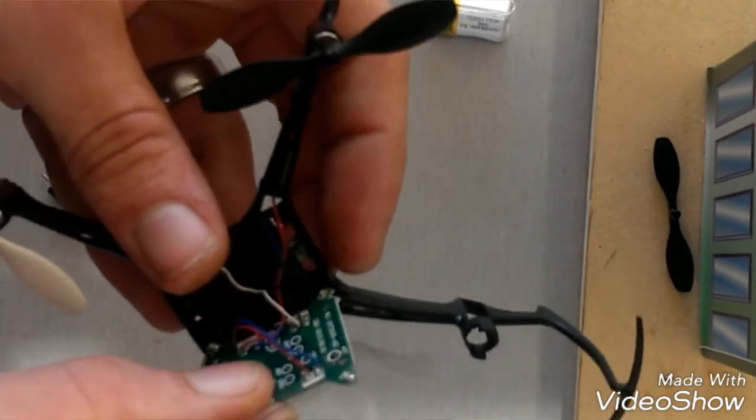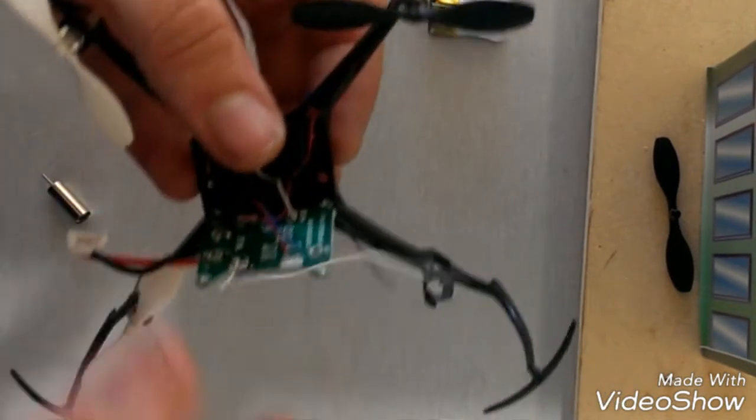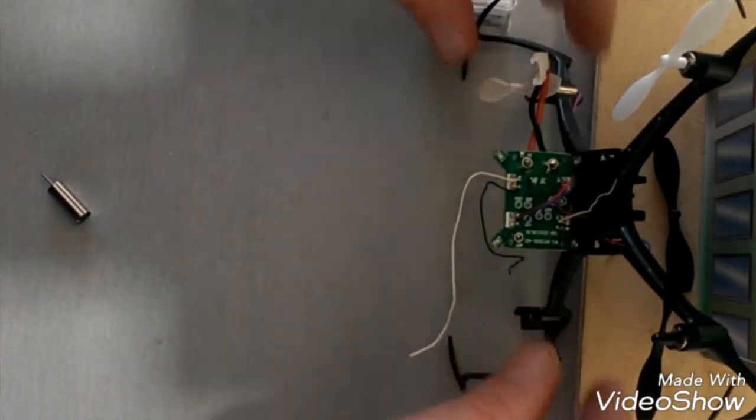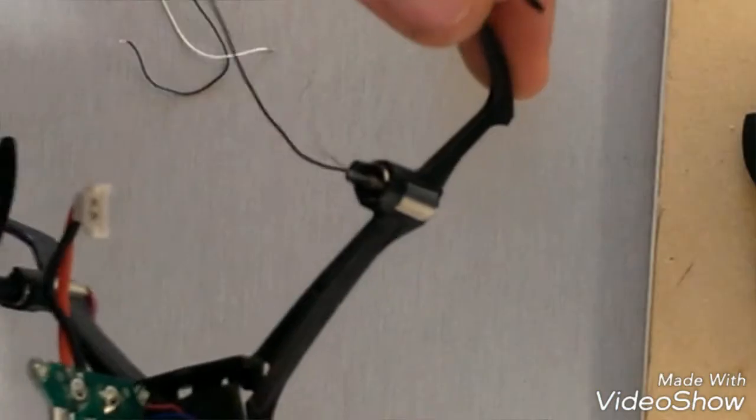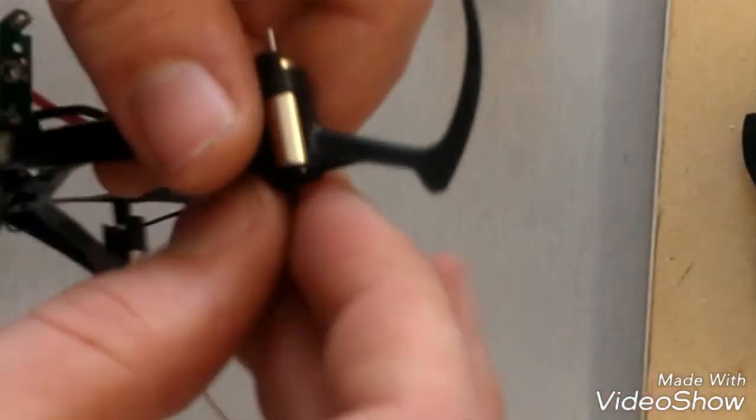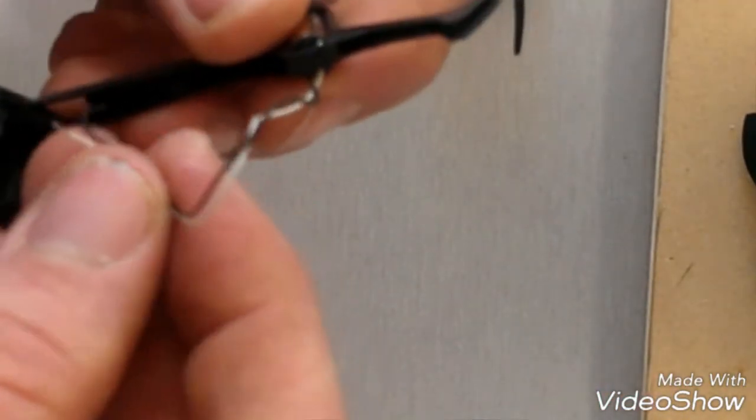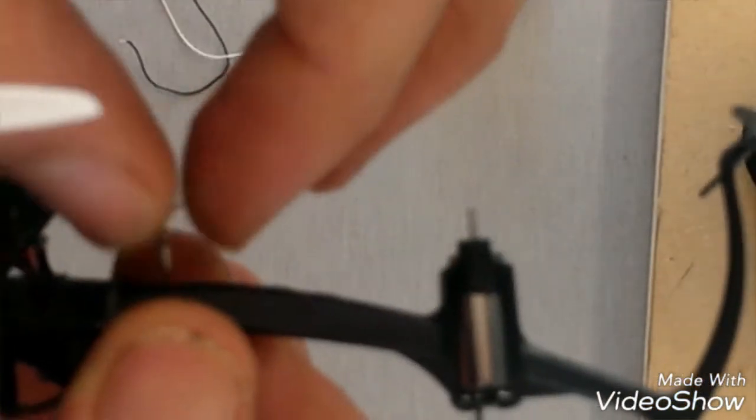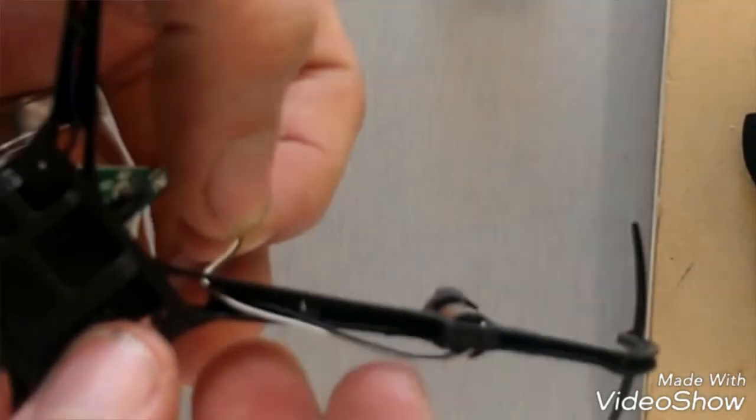So here we go, set that guy up and I'll get my soldering iron out. And I'm just gonna feed the wires. You have to do this before you solder it, very important, otherwise you'll have wires hanging around. So they just go up through the arm like that.